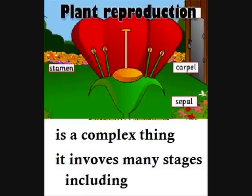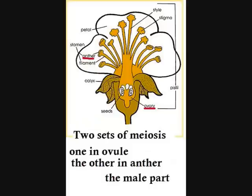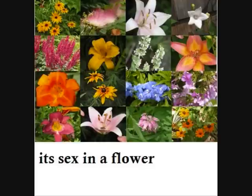Planned reproduction is a complex thing, involves many stages, including two sets of meiosis — one in the pistil, the other in the stamen, the male part.